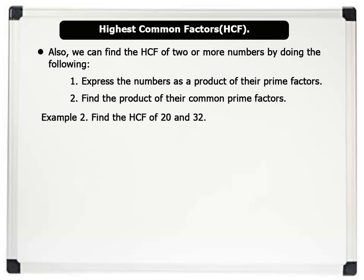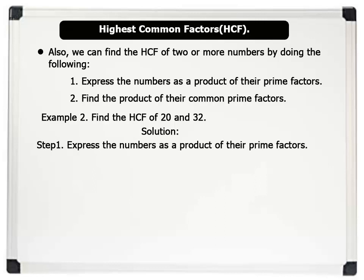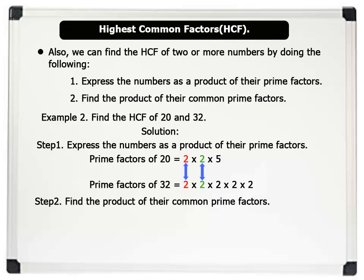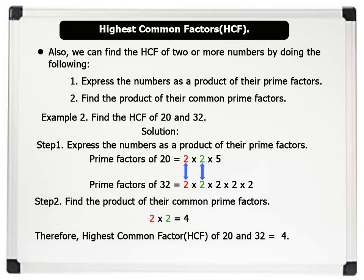Find the HCF of the numbers 20 and 32. Solution. Step 1: Express the numbers as a product of their prime factors. Prime factors of 20 = 2 × 2 × 5. And prime factors of 32 = 2 × 2 × 2 × 2 × 2. Step 2: Find the product of their common prime factors. Notice that 2 and 2 are the common prime factors of both numbers. So, 2 × 2 = 4. Therefore, the highest common factor of 20 and 32 equals 4.